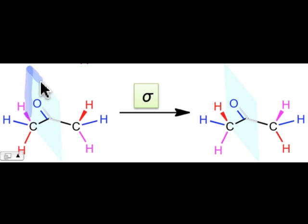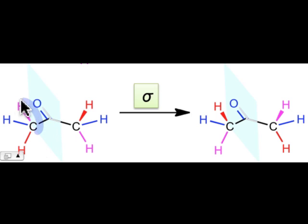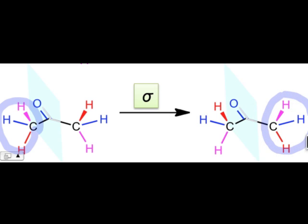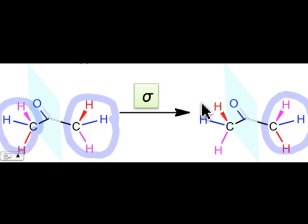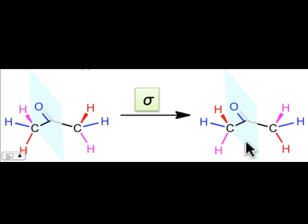Here's a plane that defines a second symmetry operation for acetone. In this case, the carbon and oxygen of the carbonyl lie in the plane. All of the atoms belonging to the methyl group originally on the left-hand side transform to the corresponding atoms on the right-hand side. Similarly, all atoms of the methyl group originally on the right-hand side transform to the methyl group now on the left-hand side. Because the molecule generated by the reflection operation is indistinguishable from the original, we conclude that we've found a second element of reflection symmetry for acetone.